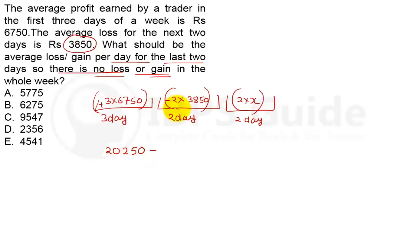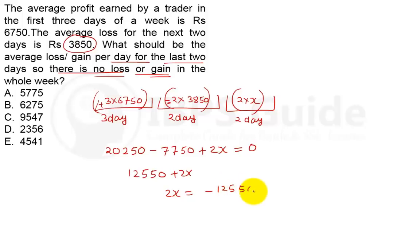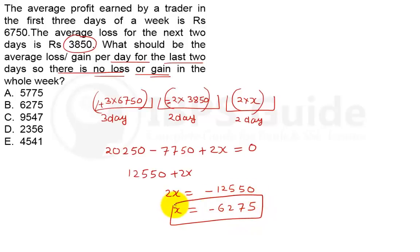So 2 × 3850 = 7700, and 3 × 6750 = 20250. Solving: 20250 − 7700 + 2x = 0 gives 12550 + 2x = 0, so 2x = −12550. The per day loss is x = 12550 ÷ 2 = 6275. So option number B, rupees 6275, will be the correct answer.